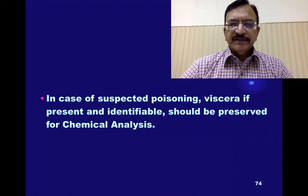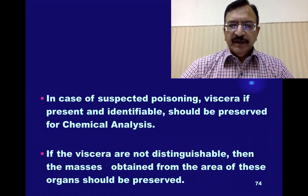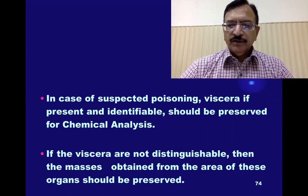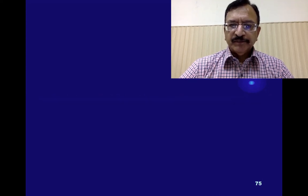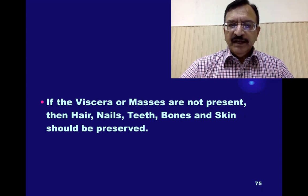In case of suspected poisoning, the viscera — if present and identifiable — should be preserved for chemical analysis. If the viscera are not distinguishable, then the masses obtained from the area of those organs should be preserved. If the viscera or masses are not present, then hair, nails, teeth, bone, and skin should be preserved.